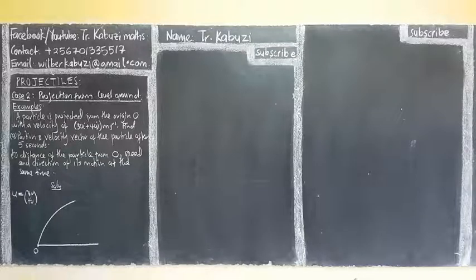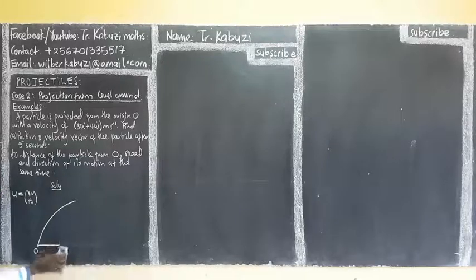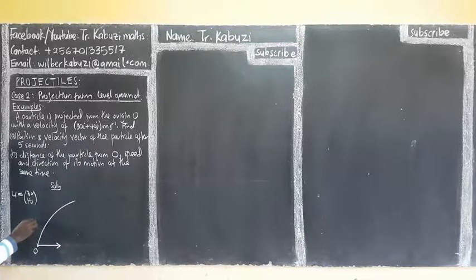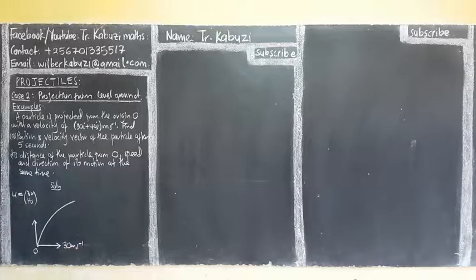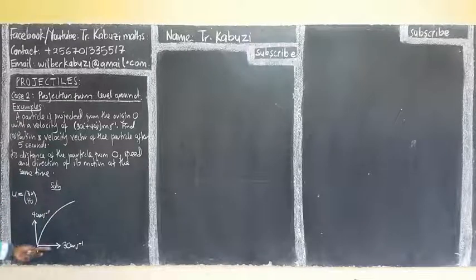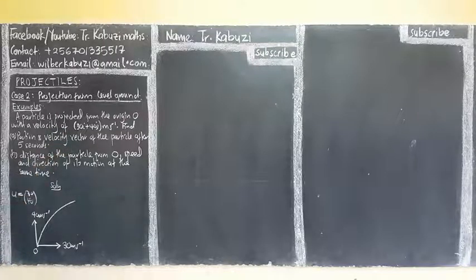Meaning that here at the start, I can give it in terms of a force — I mean in terms of components. So, they are giving us the velocity: horizontal which is 30 meters per second, then they are giving me 40 meters per second vertically. All of them are positive. That's why I am having positive, then also negative. Find the position and the velocity vector of the particle after 5 seconds.